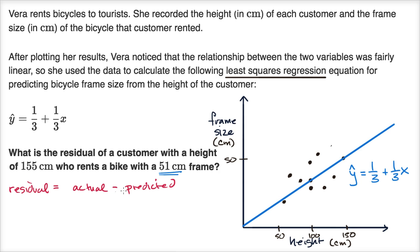So if predicted is larger than actual, this is actually going to be a negative number. If predicted is smaller than actual, this is going to be a positive number.